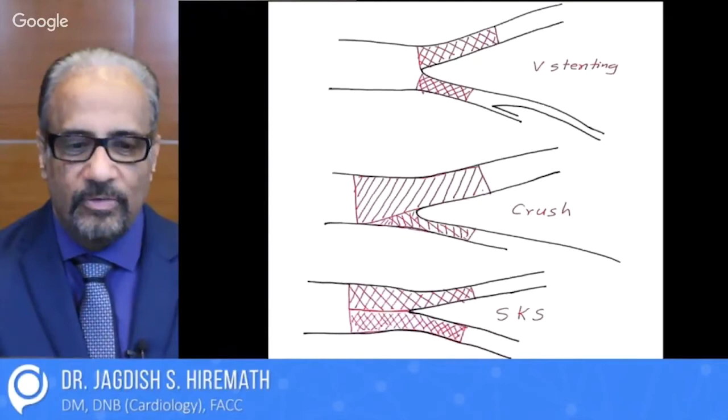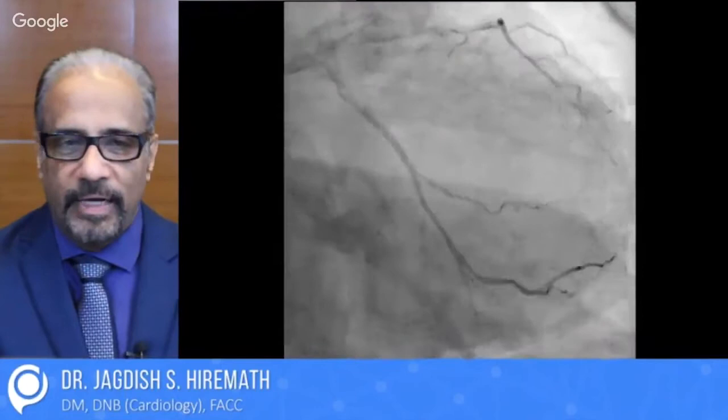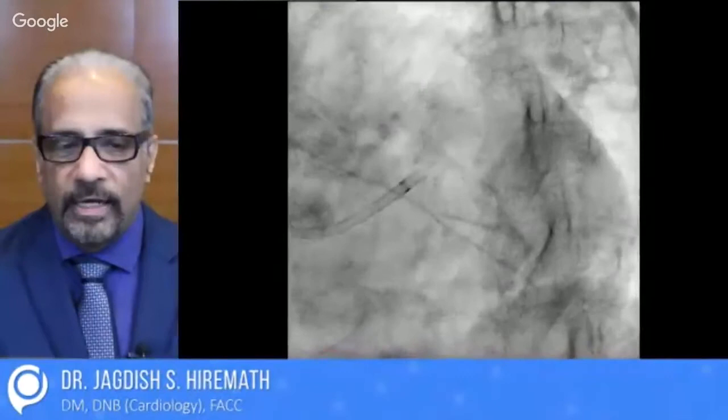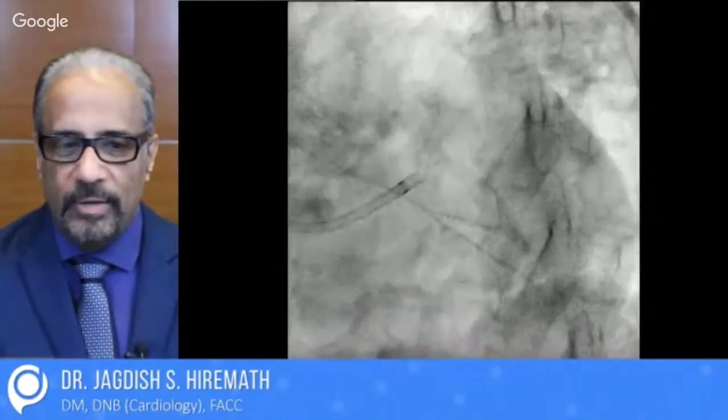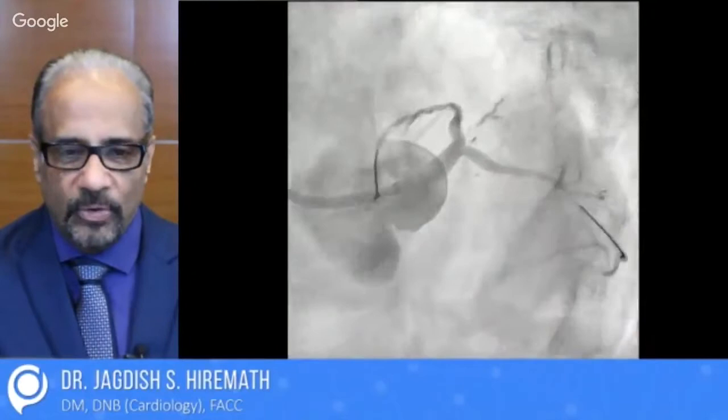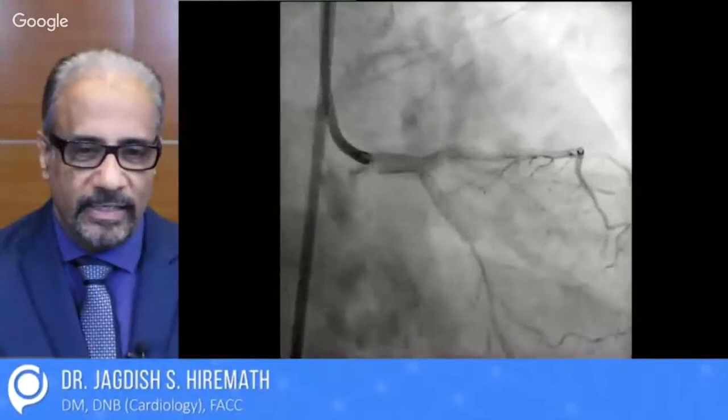This lady had a distal left main bifurcation. You can see that the proximal artery is big and right at the origin both branches are critically diseased. In another view, it shows like a spider and both branches are diseased at the origin. You put two wires, put two stents, crisscross — called bifurcation stenting. And after everything is pulled out, look at the pleasing result of a left main distal bifurcation.